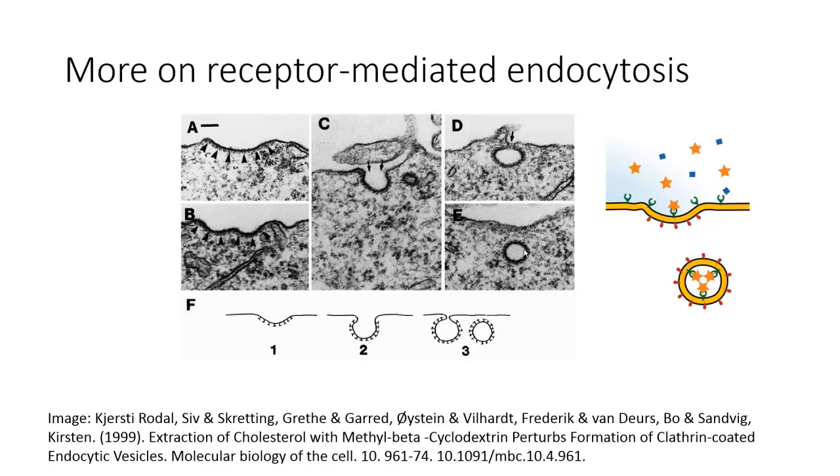So three different ways to bring stuff into the cell: phagocytosis for solids, pinocytosis for abundant dissolved things, and receptor-mediated endocytosis for less abundant dissolved things.